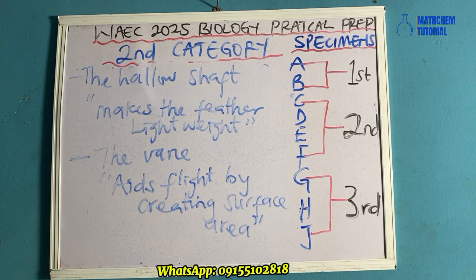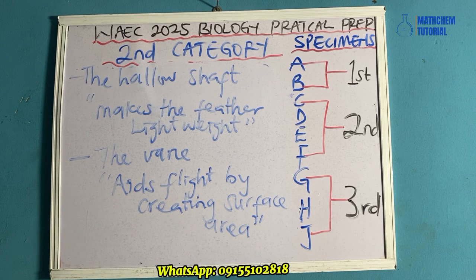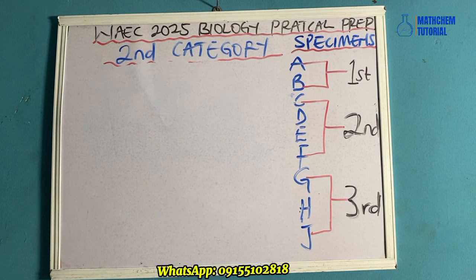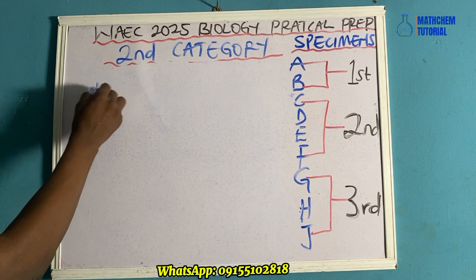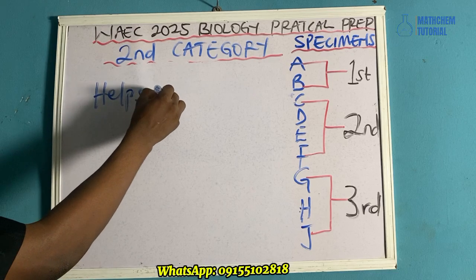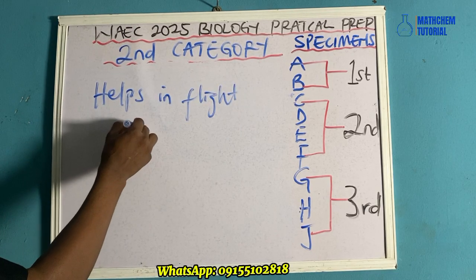Another question they can ask you from this same category is: what is the importance of the structure in specimen D to the bird? The importance of the structure in specimen D to the bird is that it helps in flight and insulation.